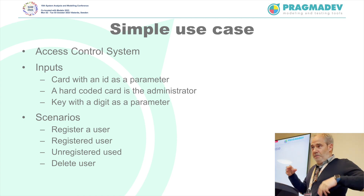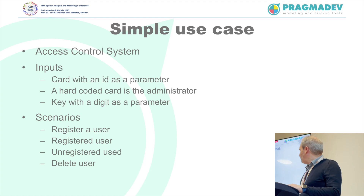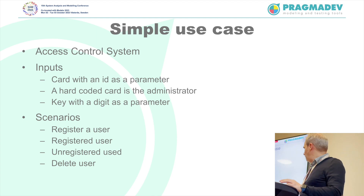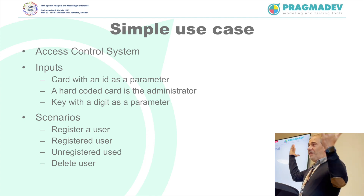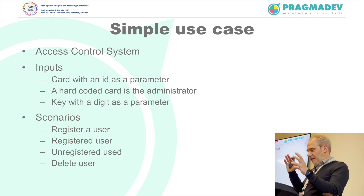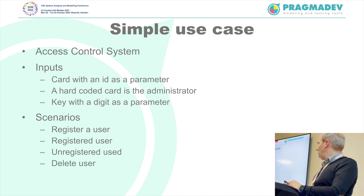We implemented this and tried it on a simple use case: the demo access control system. It's a system where you have a lock on a door, you slide your card, enter a pin code, and you're allowed in or not. The inputs are a card with a card ID and a pin code with three or four digits. It's quite simple, but if you combine all the parameters — the card ID can be quite large — you can create a huge number of states, which are quite useless.